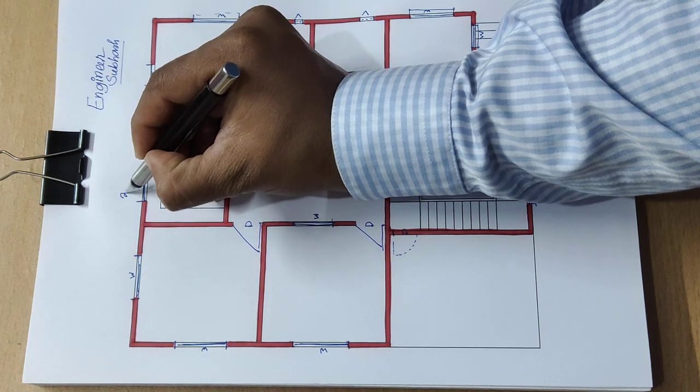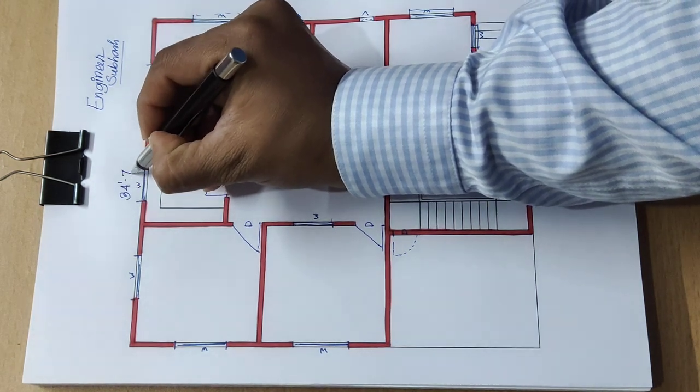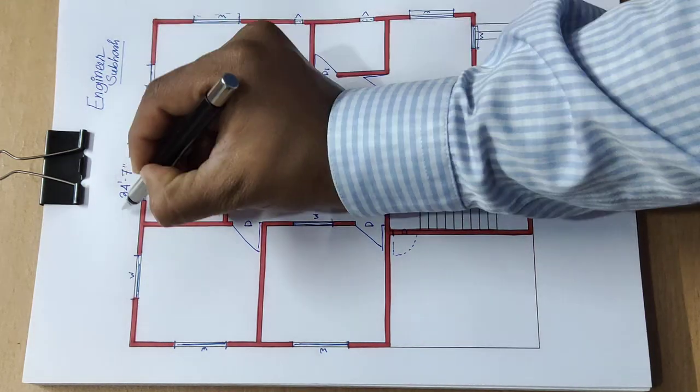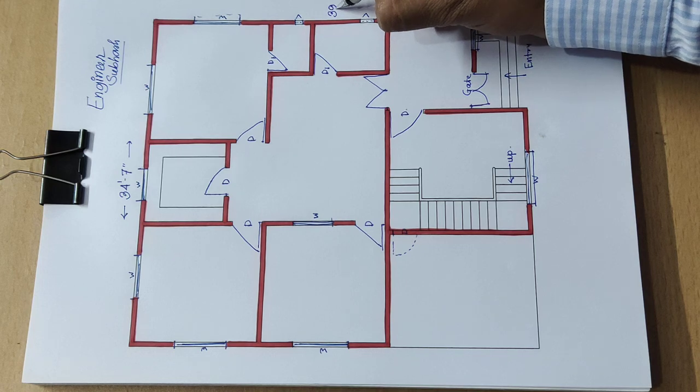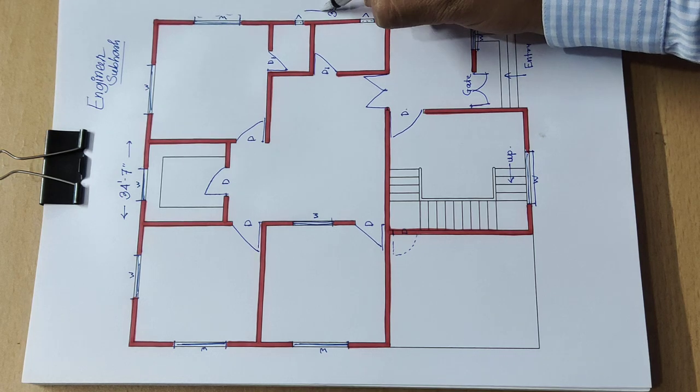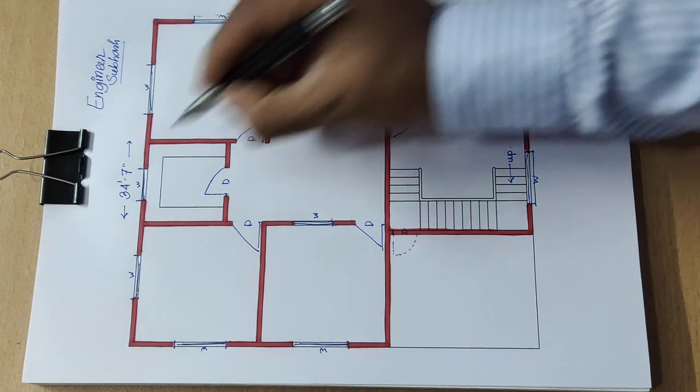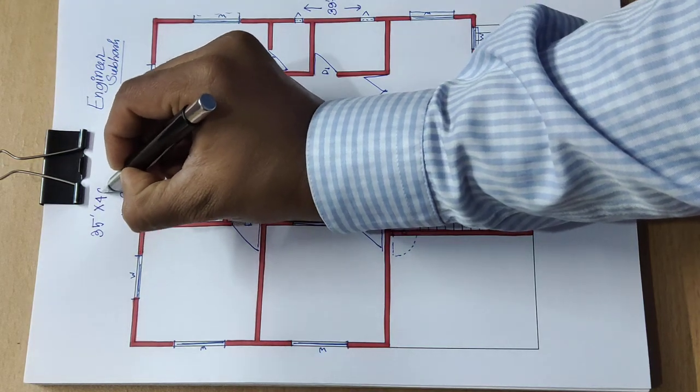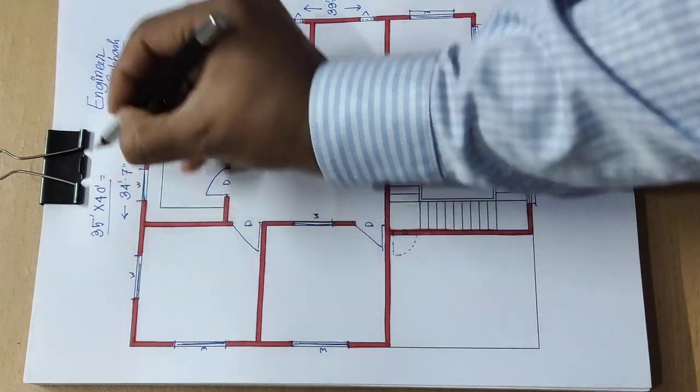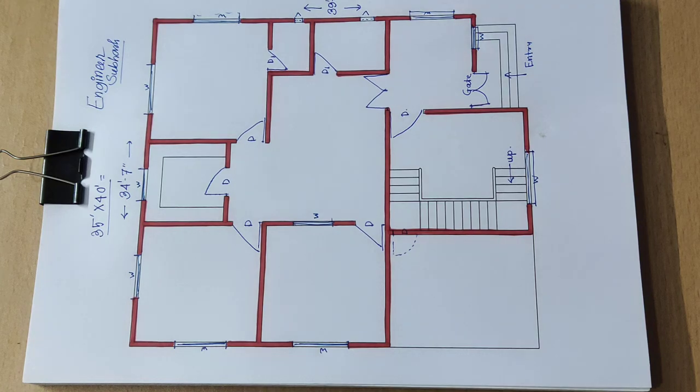Drawing is 34 feet 7 inch wide and 39 feet 3 inch. So the total is 35 feet into 40 feet house plan design.